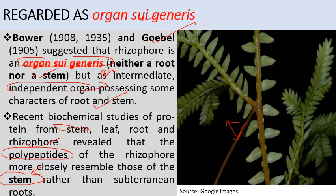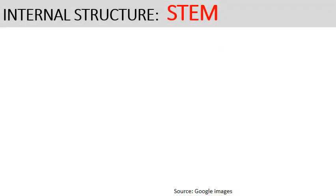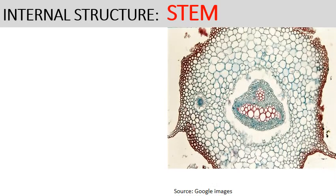Next are the internal structures. Starting with stem: the stem shows almost a similar pattern across all species, but the stelar system is variable. A cross-section shows outermost epidermis, followed by a broad cortex layer, then endodermis as the innermost cortex layer, modified into trabeculae, then pericycle, then the central stelar system. Based on the number of steles, the stem can be monostelic, distelic, or polystelic.